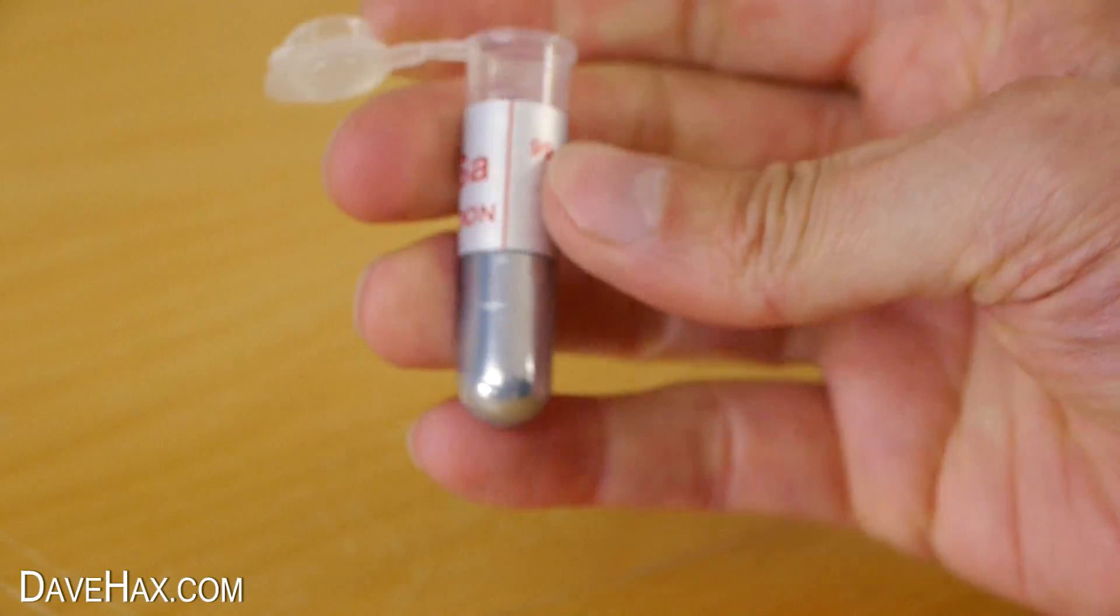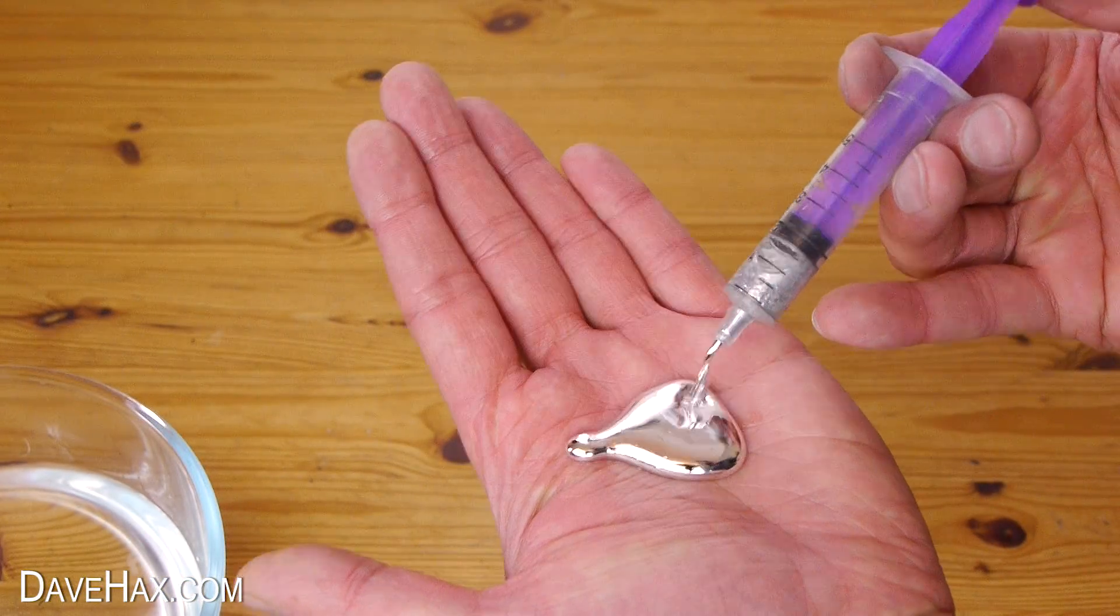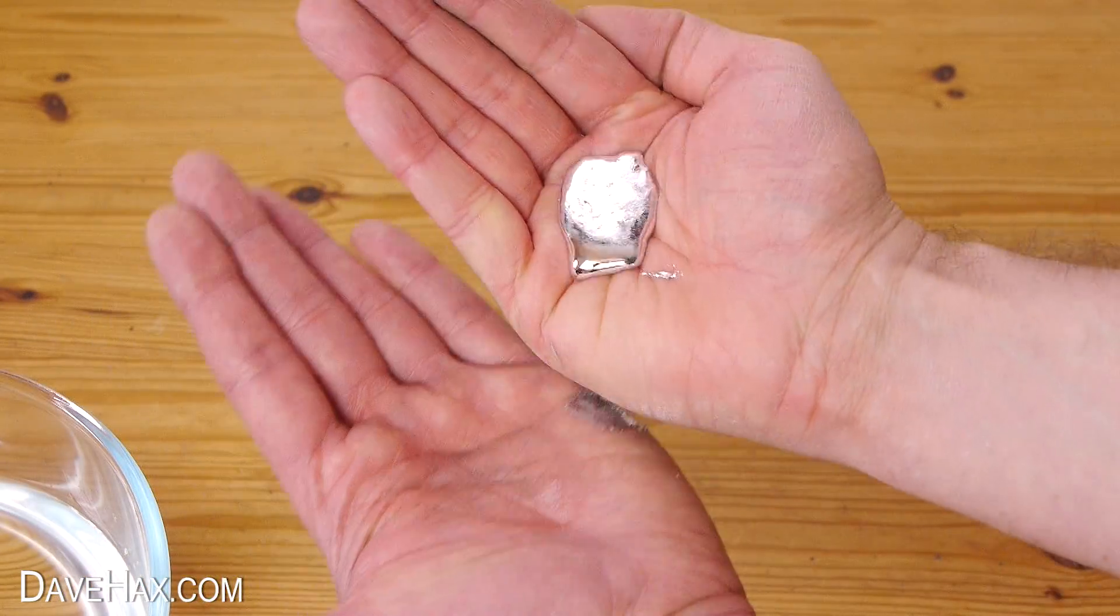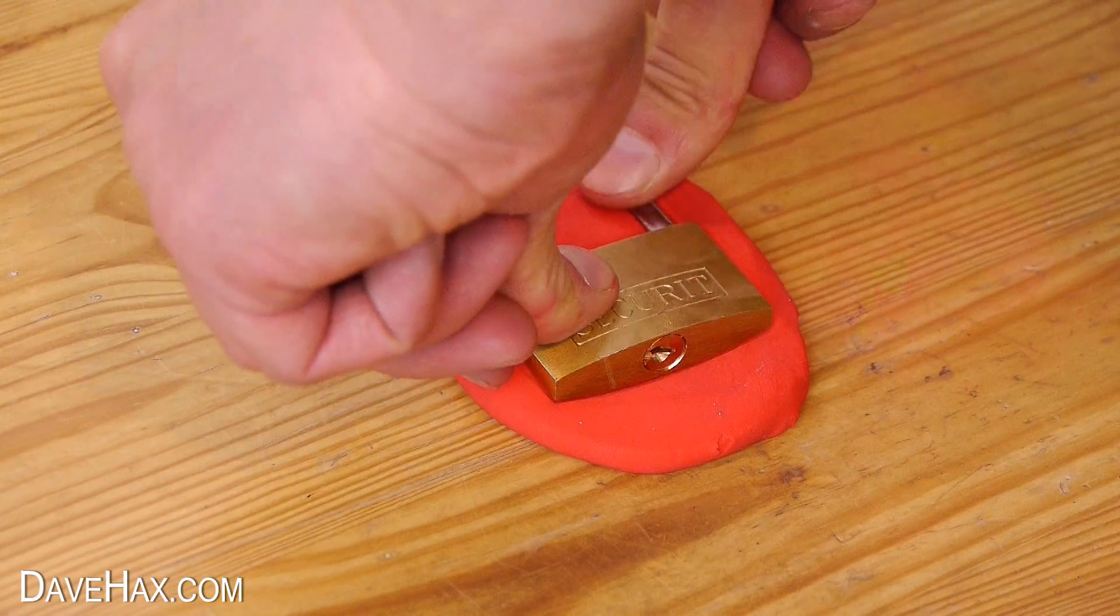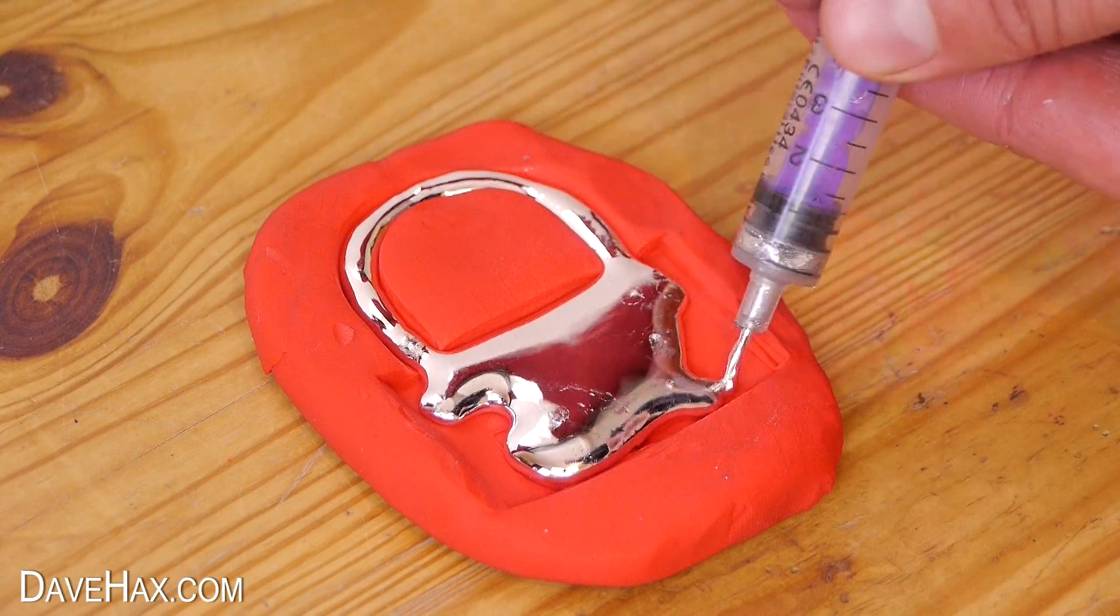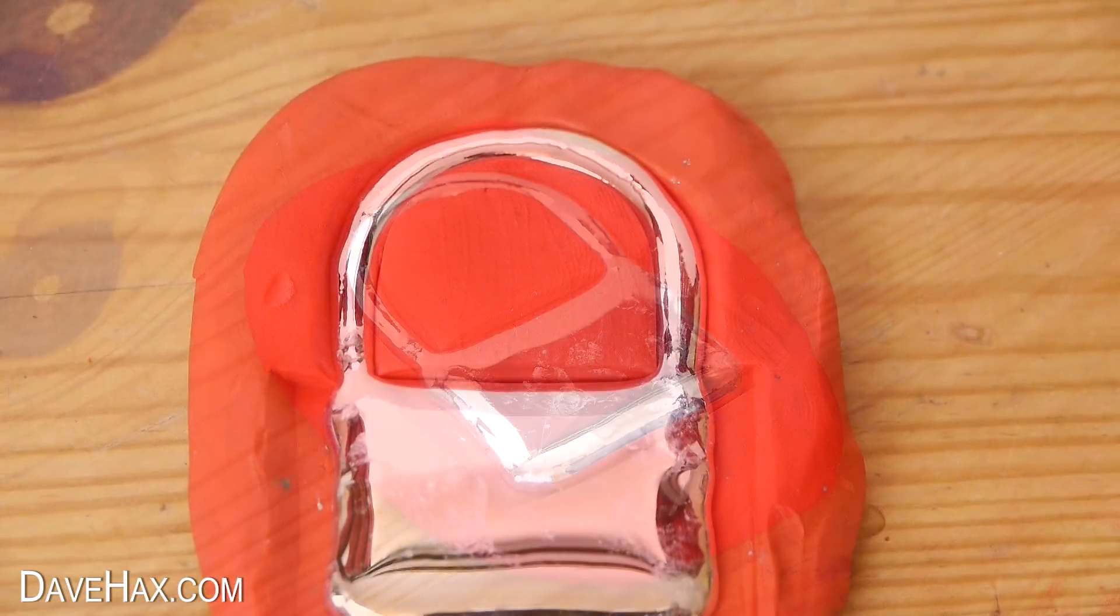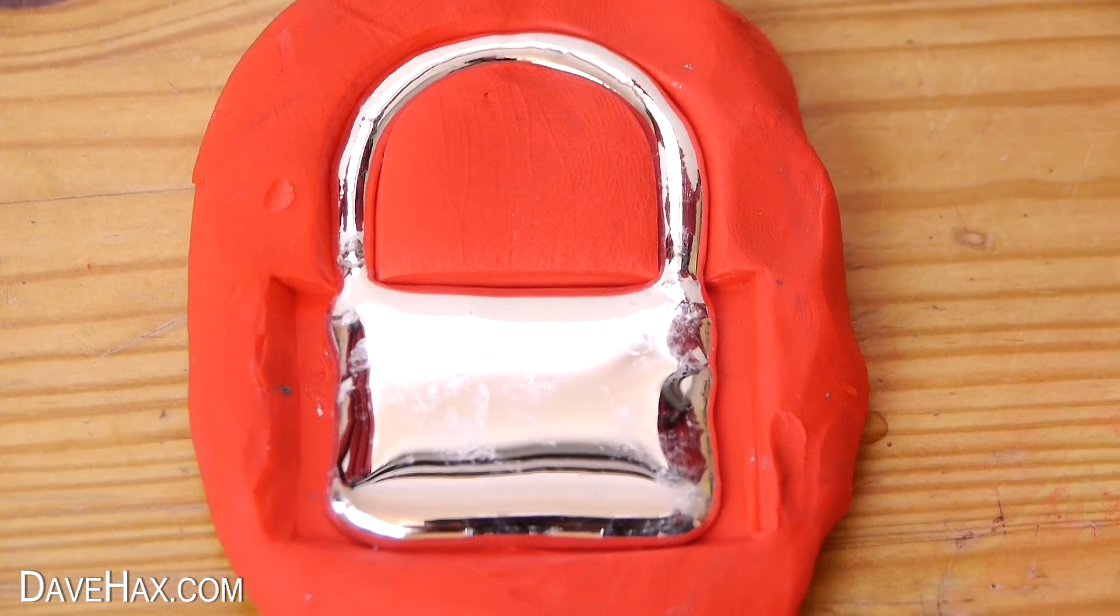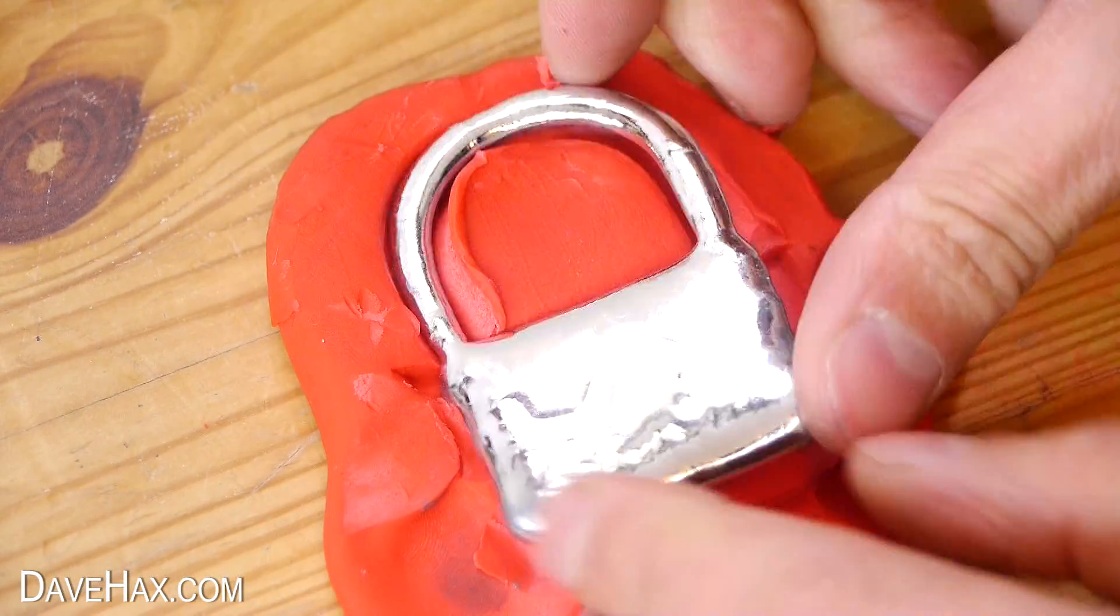In the last video I made about gallium metal, which is solid at room temperature but turns into a liquid above 30 degrees Celsius, I ended by making a mold of a padlock in plasticine and filling it with gallium to make a casting. Unfortunately, I didn't have quite enough gallium to fill the mold completely, but it didn't really matter. Once it set, I peeled it out of the plasticine and this is what we got.